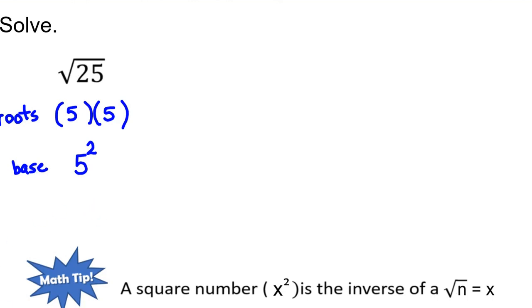For my math tip today, a square number, in this case x squared, is the inverse of the square root of that number. So here, if I have the square root of 25, this is going to give me 5, and 5 squared will give me 25. So these are inverse operations of each other.